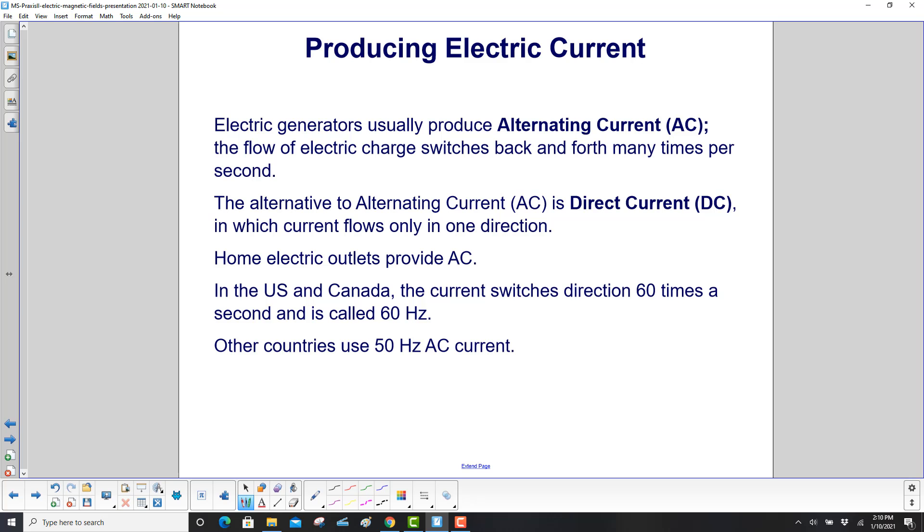Electric generators usually produce alternating current. The flow of electric charge switches back and forth many times per second. The alternative to alternating current is direct current or DC, in which current flows only in one direction.